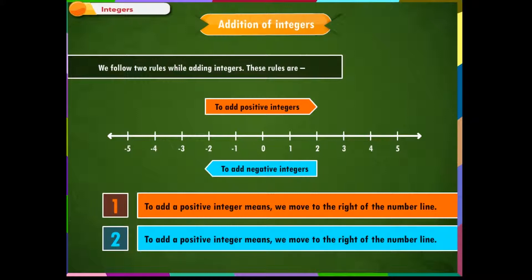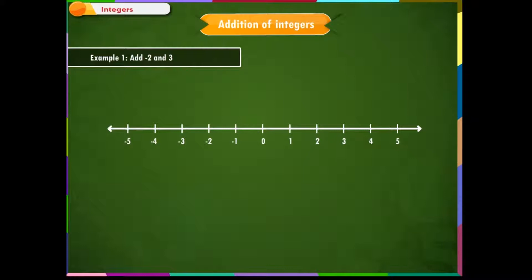Let us understand addition of integers using these examples. Example 1: Add minus 2 and 3. We write this problem as minus 2 plus 3. We use a number line to solve this problem. Mark the first integer on the number line. Since we are adding a positive integer, that is plus 3, we start from minus 2 and move three steps towards the right. We reach at 1. Therefore, minus 2 plus 3 is equal to 1.